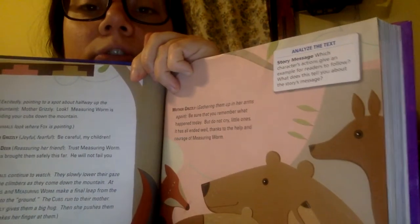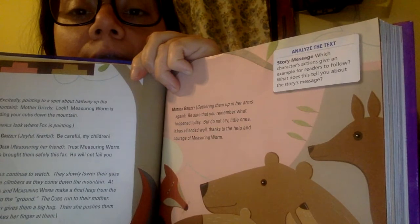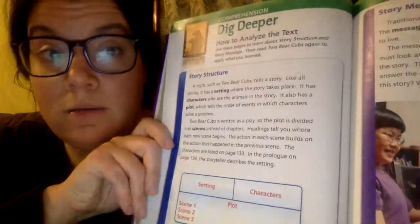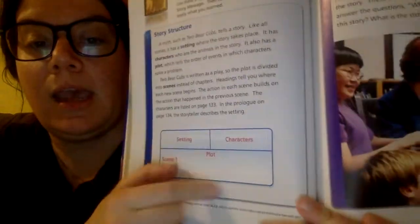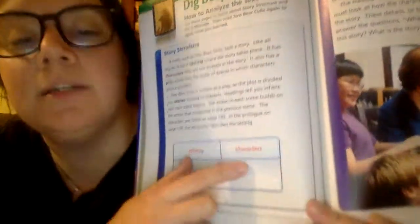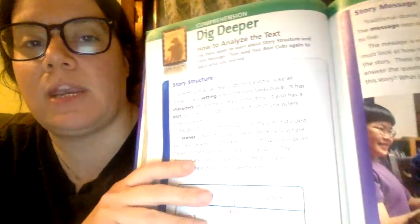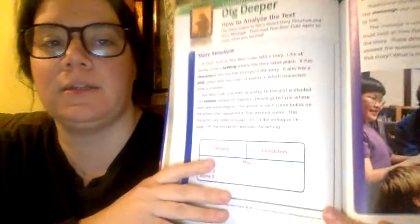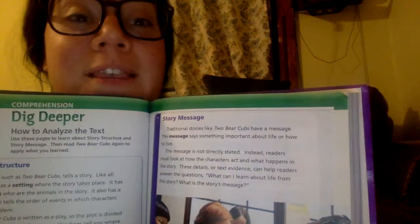Think about the story's message: which characters' actions give an example for readers to follow, and what does this tell you about the story's message? Think back to the topic of social relationships and what all the characters did — especially Measuring Worm. For Part 1 of your follow-up work, make the chart graphic organizer on a full page with room to write: the setting, the characters in complete sentences, and the plot for Scene 1, Scene 2, and Scene 3 with complete sentences and text evidence.